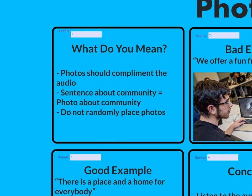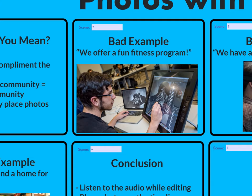When you import stuff into the timeline, it'll randomly place photos, so you want to rearrange it so it makes sense. Here's a bad example: as you go through the timeline and play back your video, you hear the sentence 'we offer a fun fitness program,' but the photo shown is someone doing art — that doesn't look like a fitness program. So if you're talking about a fitness program, you should have someone doing something fitness-related.